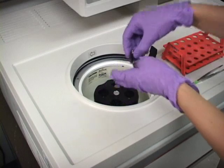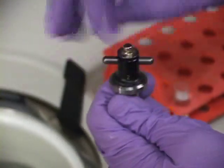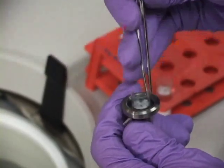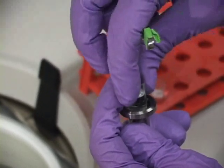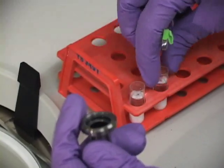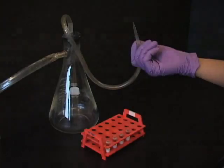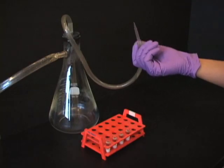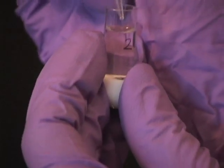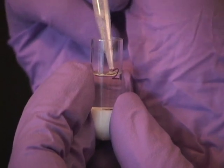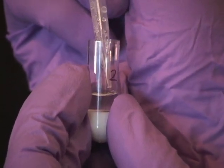After the spin, remove tubes with forceps. Carefully aspirate off the supernatant and the cushion. Do not allow the supernatant to contact the coverslip or background fluorescence will be high.